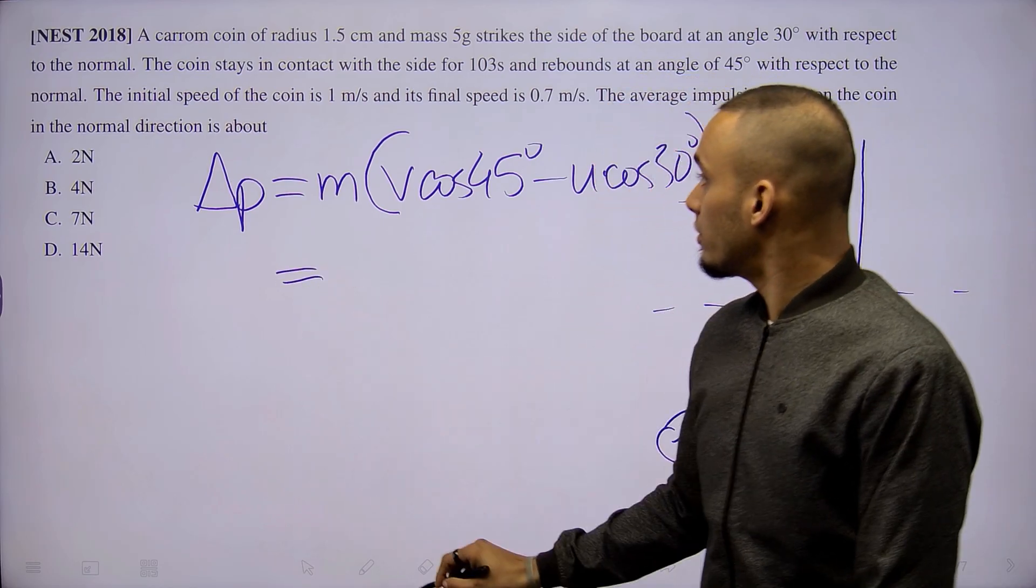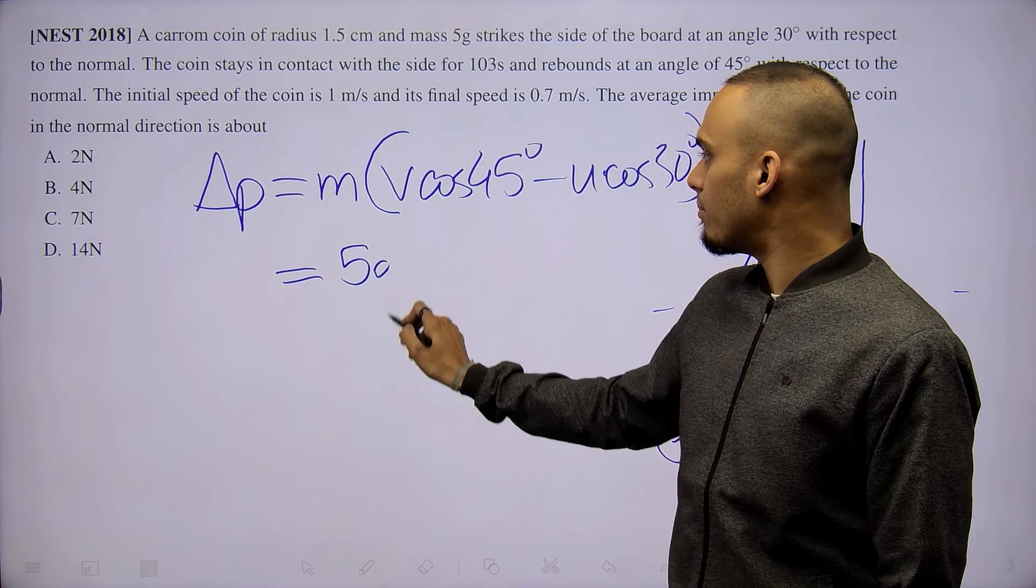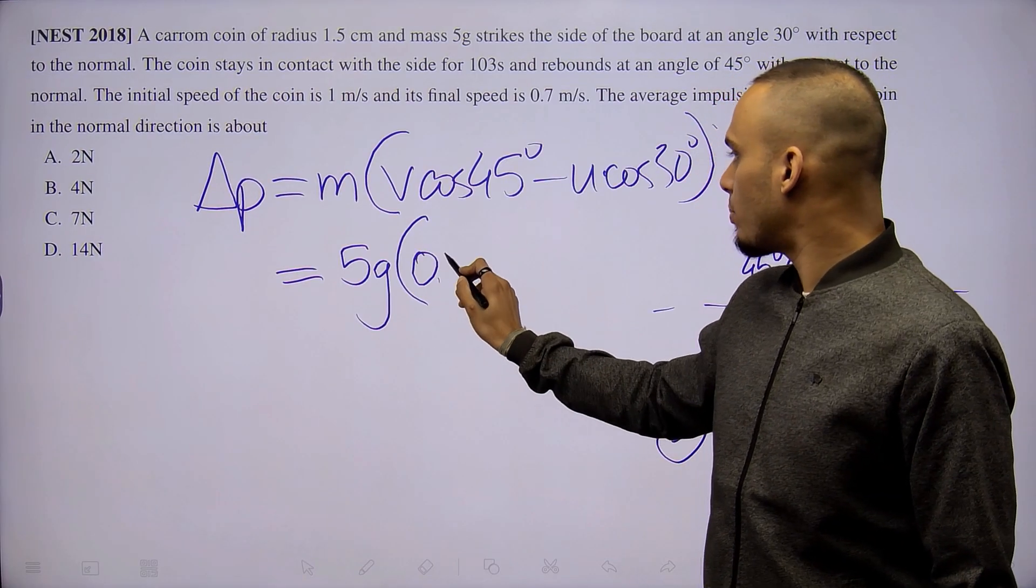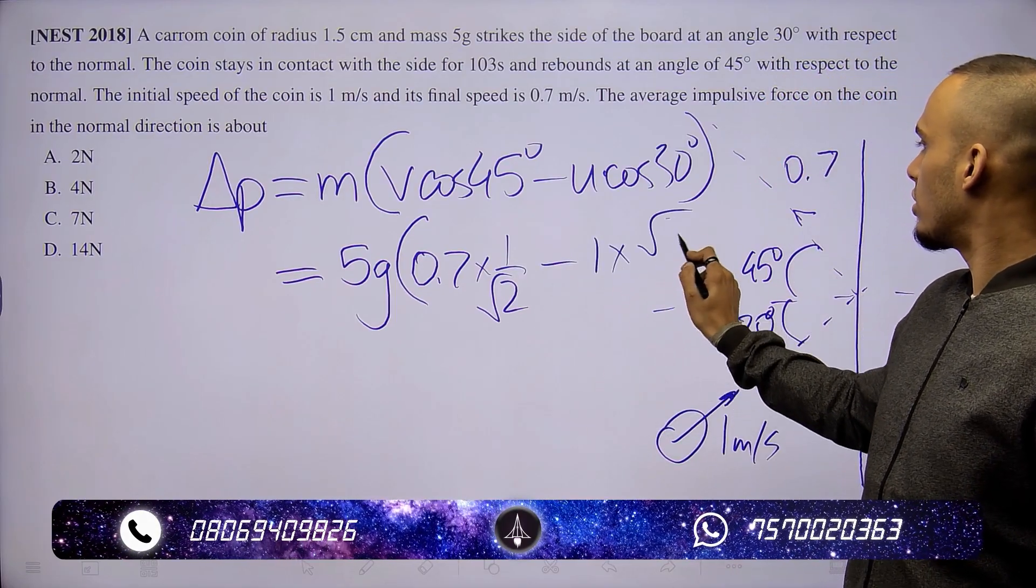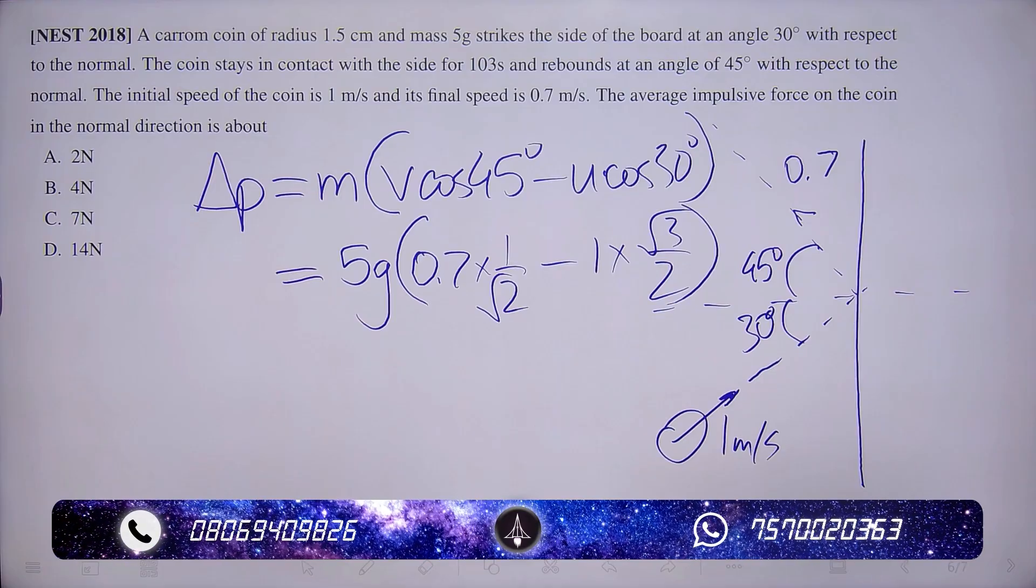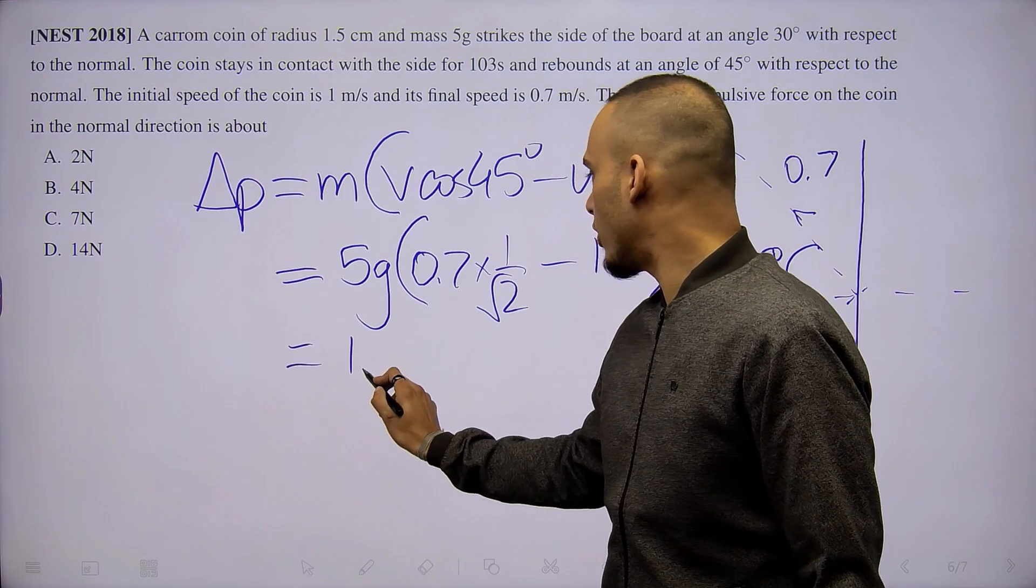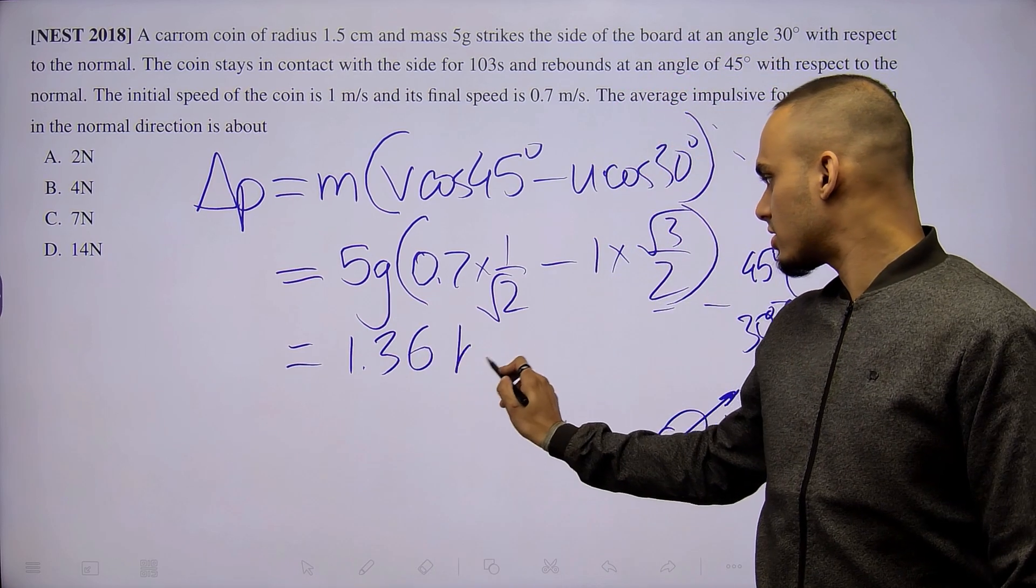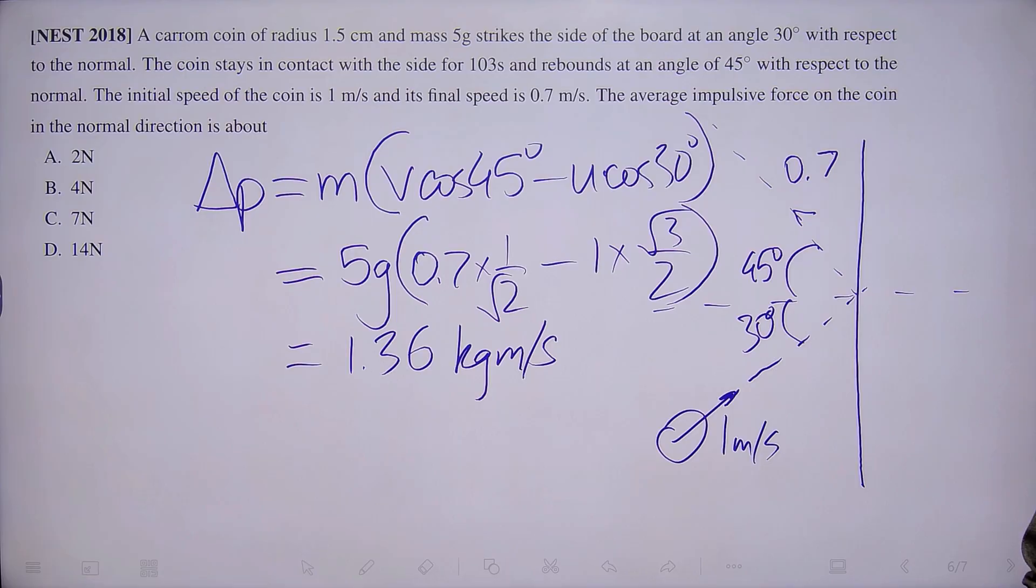If we substitute the values over here, 5 gram mass colliding with a final speed of 0.7 times 1 over root 2 minus 1 times root 3 by 2, we get a value of total change in momentum of approximately 1.36 kg meter per second. Of course we convert everything into SI units.